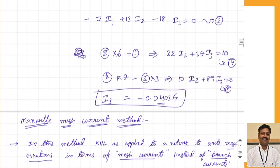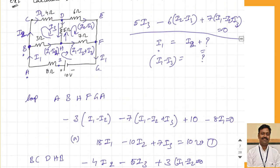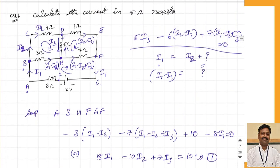So what does this mean? In our previous class, we took one numerical. I took different currents: current I1 passing through one branch, I2 passing through another. If you take this branch, the current becomes I1 minus I2, and in another branch it becomes I1 minus I2 plus I3, and here it is I2 minus I3.